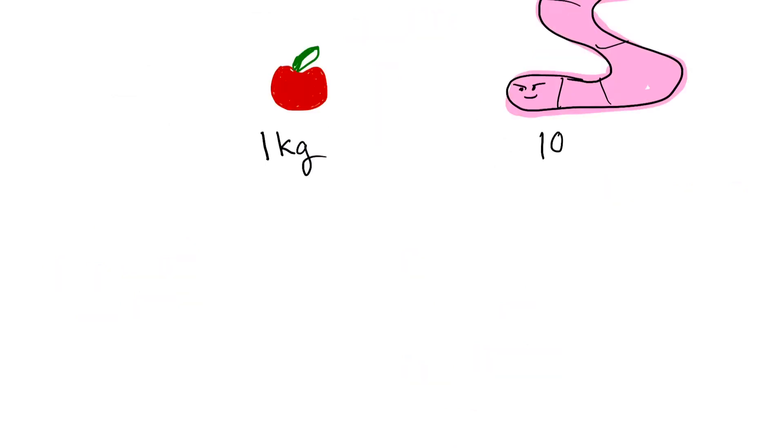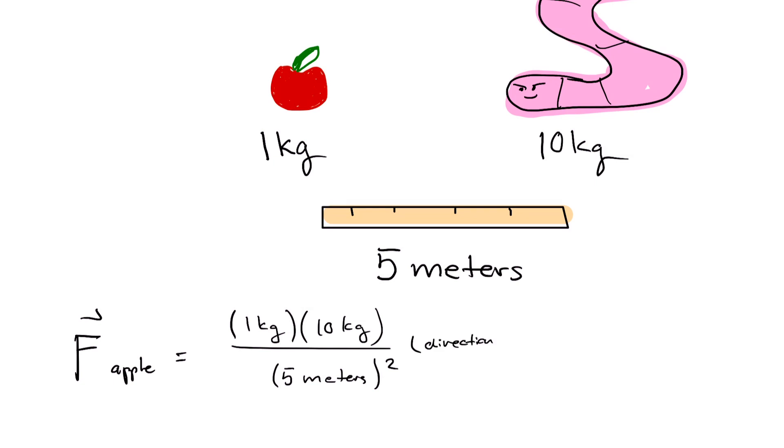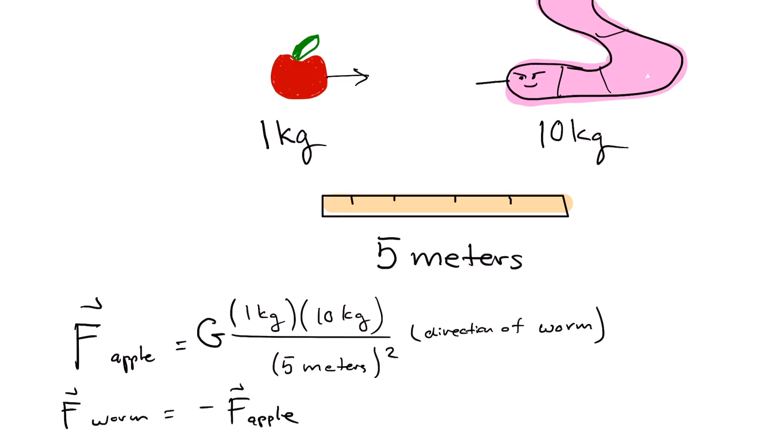As an example, consider you have a 1 kilogram apple and a regular giant 10 kilogram worm 5 meters away from the apple. Well, according to math, the force exerted on these two monsters is equal to the product of their combined weight divided by their distance squared.